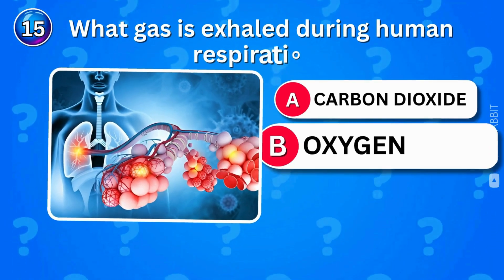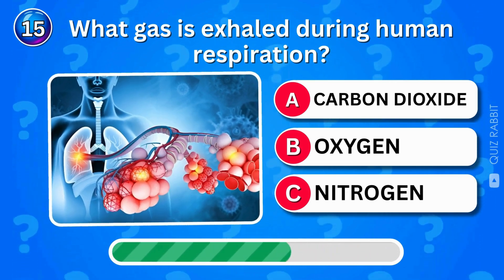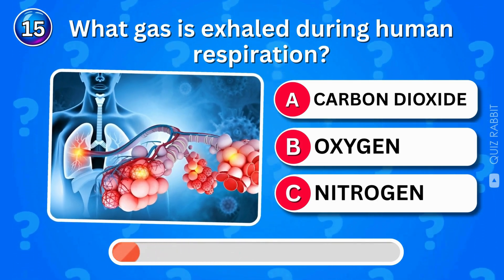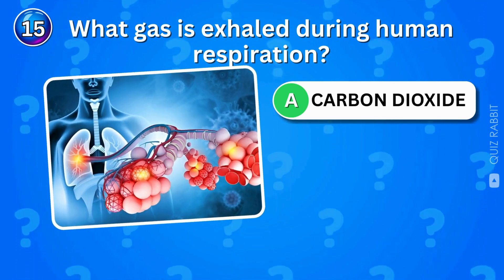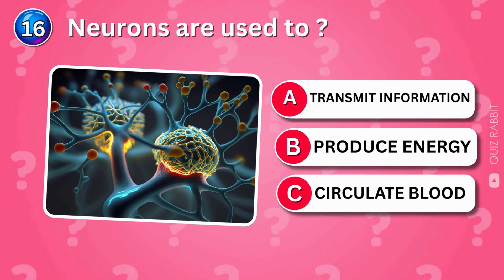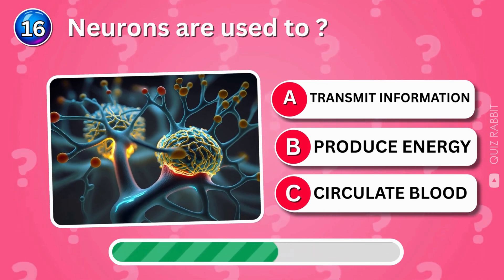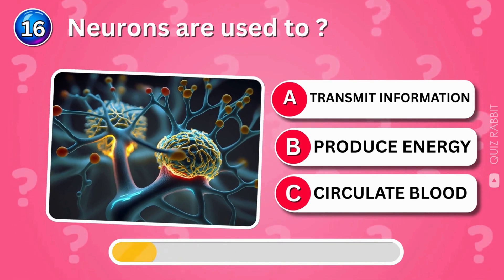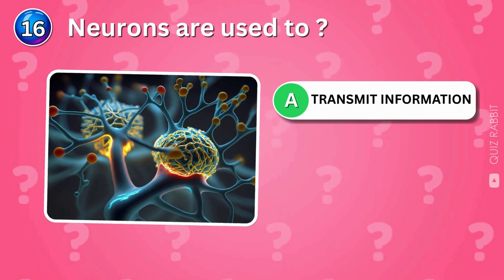Which gas is exhaled during human respiration? Carbon dioxide — we breathe in oxygen, but what we let out is just as important. What are neurons used for? Neurons transmit information — they're your body's messaging system.